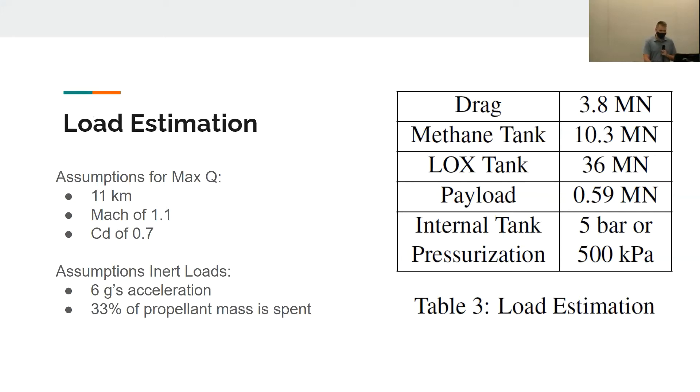That gives us a drag load of about 3.8 meganewtons, which we're going to apply as a point load to the top of the vehicle. The methane tank and the liquid oxygen tanks are also going to have inert loads on them due to the mass of the propellants and the 6 g's acceleration that the vehicle is undergoing during this time.